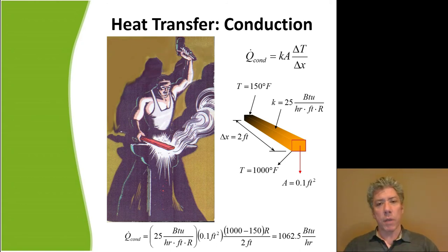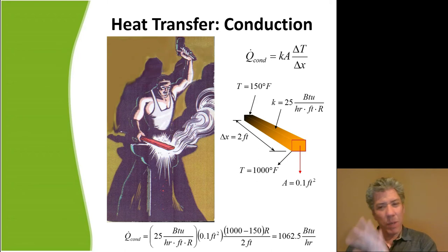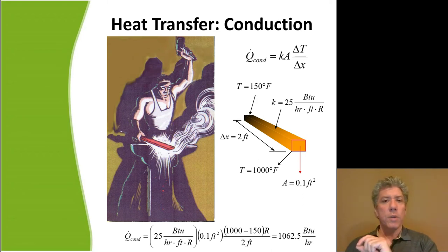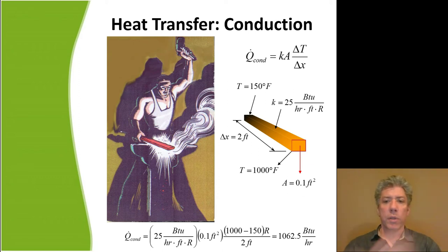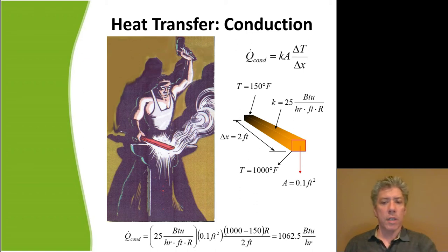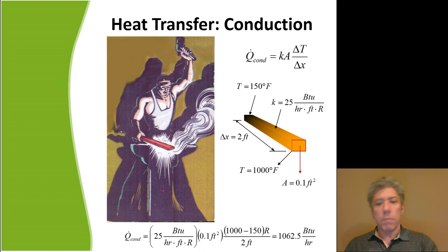One thing really important about this equation: it's really a differential equation — don't worry about that right now. We're only looking at heat transfer in one direction along the length of the rod, ignoring convective cooling by the surrounding air so we can focus on conduction. The length of the bar is 2 feet — that's our delta X. Plugging all that in gives 1,062.5 BTUs per hour.